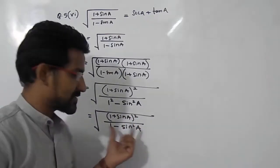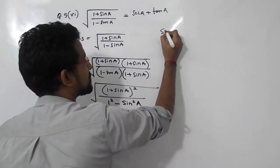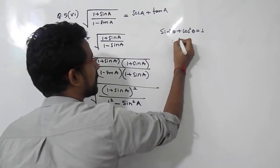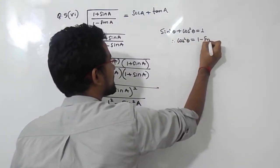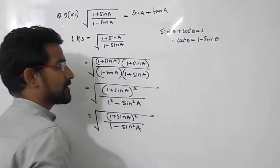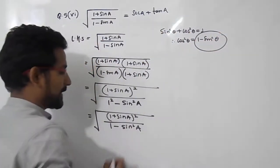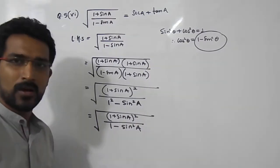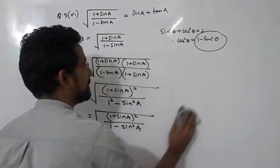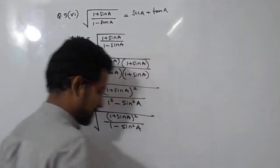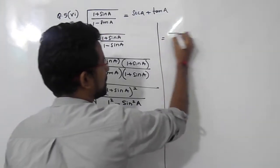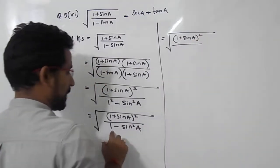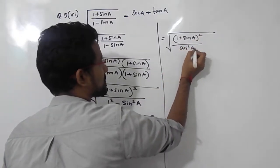Now we have studied an identity that sin squared theta plus cos squared theta equals 1. So therefore cos squared theta equals 1 minus sin squared theta. So in the place of 1 minus sin squared theta I can write cos squared theta. So 1 minus sin squared A can be written as cos squared A. So in the next step we will write (1 plus sin A) whole squared divided by cos squared A.